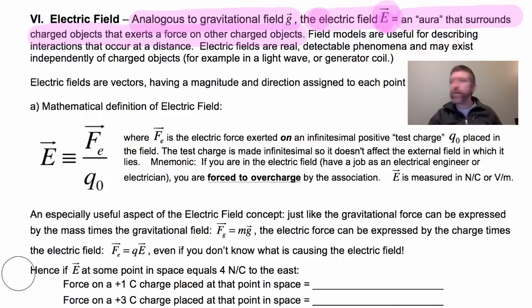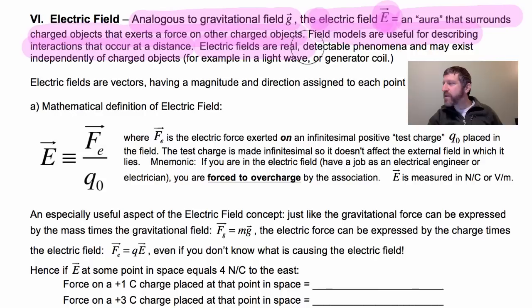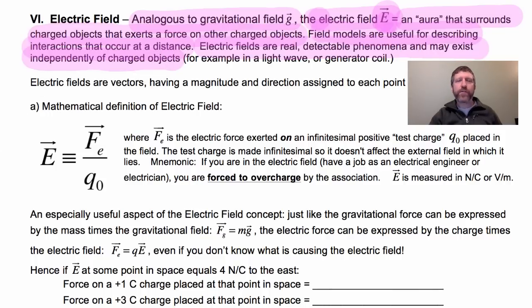Field models are very useful for describing all kinds of interactions that occur at a distance. Right now we're being affected by the gravity of the sun, even though that's millions of miles away. Electric fields are similar. Notice that electric fields are actually real things — they are detectable phenomena, and they can exist independently of charged objects. You can have electric fields without any charges present.